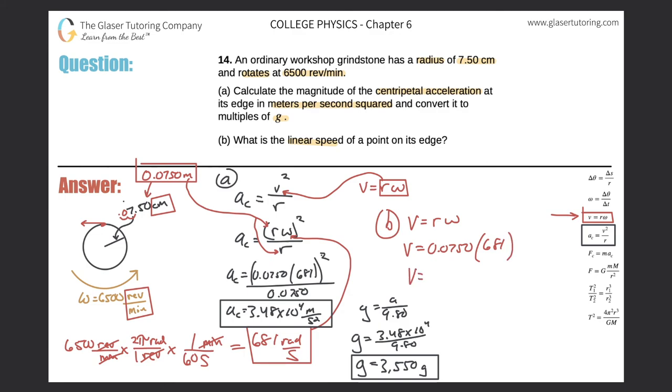All right. And that will get us the tangential velocity 0.075 times 681 is 51.1. So 51.1, and that is in meters per second. Okay. And that will be the final answer.